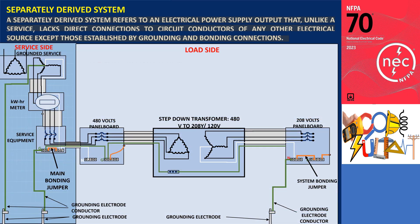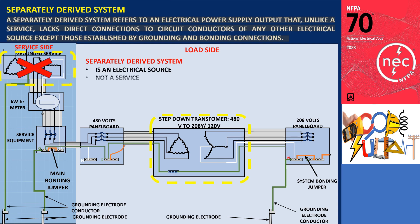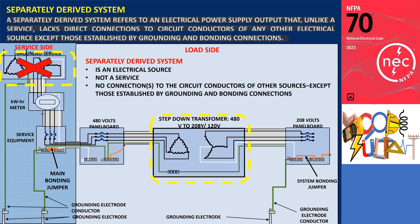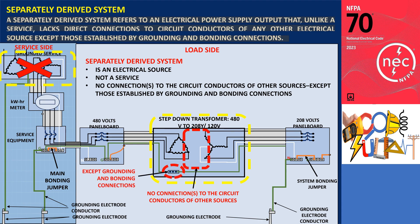The lack of direct connections applies except those established by grounding and bonding connections. Therefore, a separately derived system is an electrical source not provided by the utility or service — it has no direct electrical connection to the service-derived system, meaning no direct connection to circuit conductors of any other electrical source except those established by grounding and bonding connections.